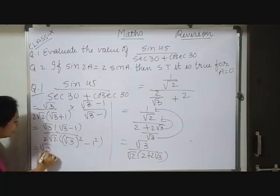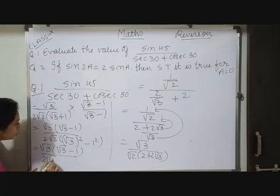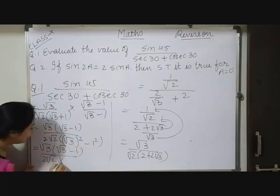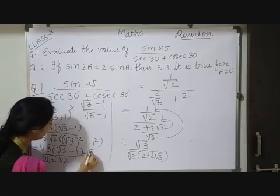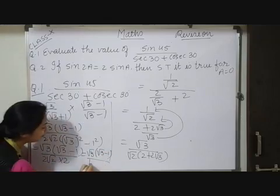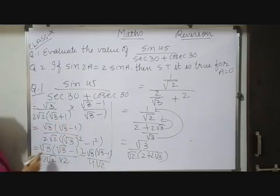So this equals root 3 into root 3 minus 1 upon 2 root 2. Root and square will be cancelled out, so that is 3, and 3 minus 1 will be 2. So this equals root 3 into root 3 minus 1 all divided by 4 root 2.